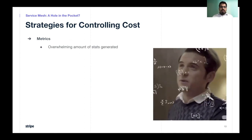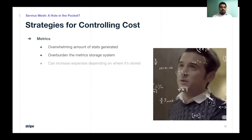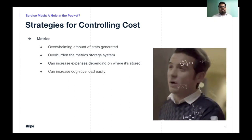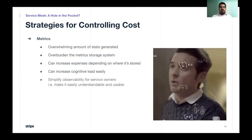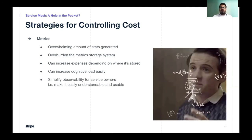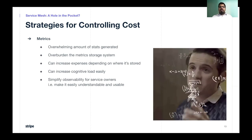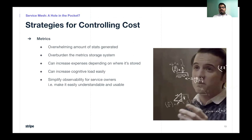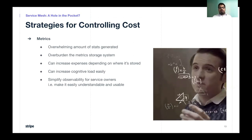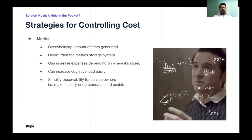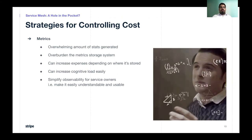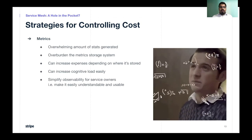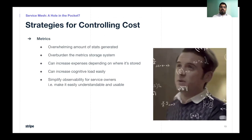Service mesh proxies generate a large number of stats, and they can quickly overwhelm your metric storage system, meaning you'll be spending a lot of money just on metric storage. These metrics can also increase cognitive load because they come from disparate sources. It becomes important to simplify observability for service owners to easily understand the state of the system. You can simplify metrics by filtering out irrelevant metrics or combining metrics from different sources to provide a unified view. At Stripe, if we do not control the way metrics are generated, it has the capacity to quickly consume a majority of our metrics budget.